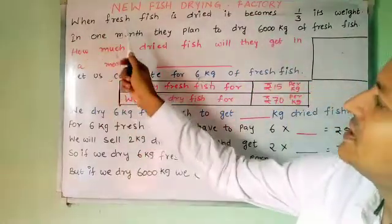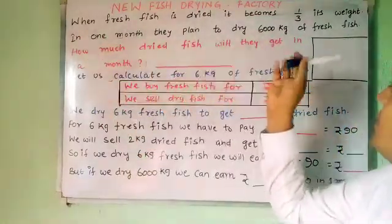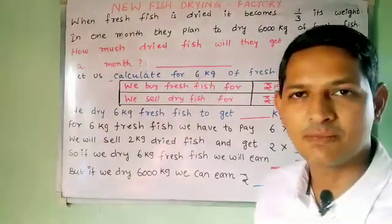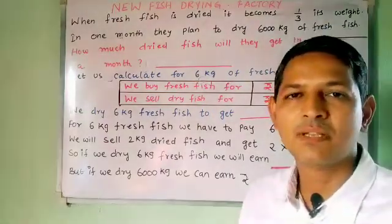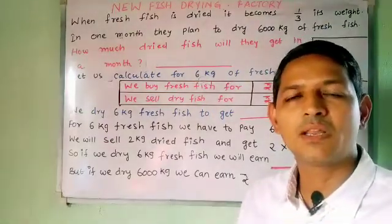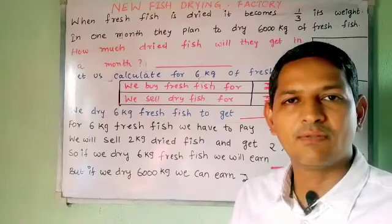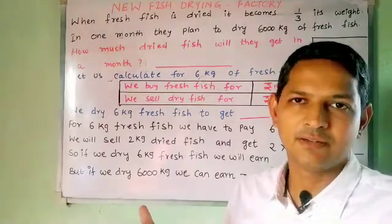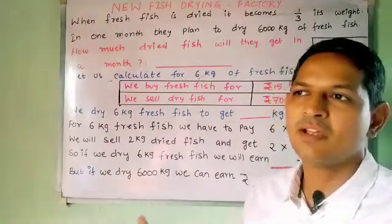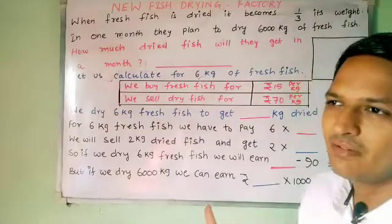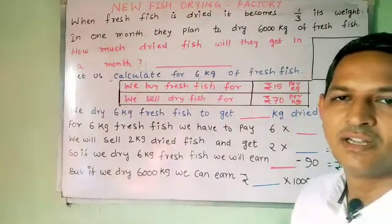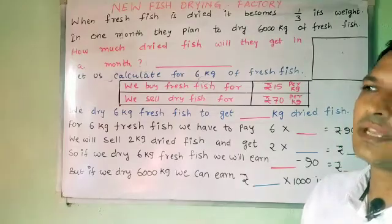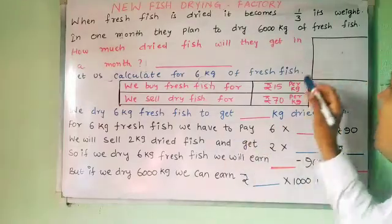When fresh fish is dried, it becomes one third of its weight. Whenever we are drying something, the water in that particular thing evaporates and it becomes lighter. So in the same way, whenever one kilogram of fresh fish is dried, it becomes one third of its weight.